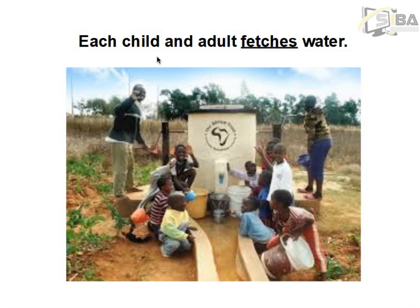With this sentence, we have: each child and adult fetches water. You can see that child and adult come after the word each. Because the word each is emphasizing on individual persons, the verb in the sentence should also be singular. That is why we have added S to the verb to make it singular, and the two agree in number. In the picture too, you could see some children together with some adults fetching water.